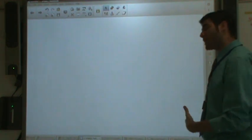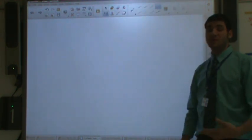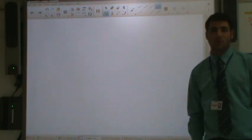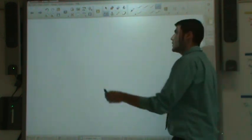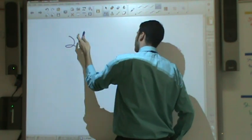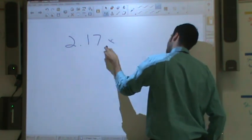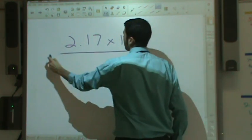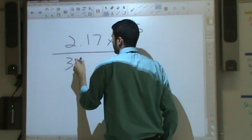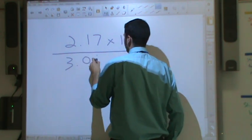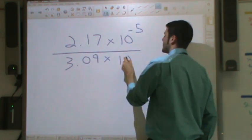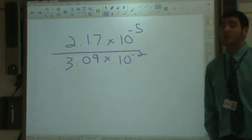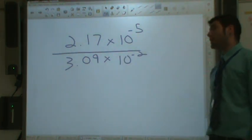So division with scientific notation, it can be a little tricky. Let's take a look at a more difficult type of problem. We have 2.17 times 10 to the negative 5, and let's divide that by 3.09 times 10 to the negative 2. Nice and difficult problem, let's take a look at it.